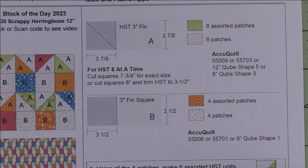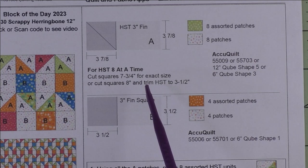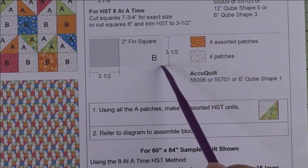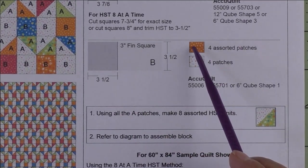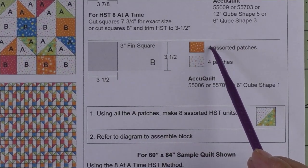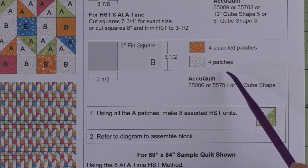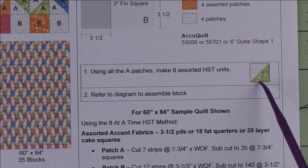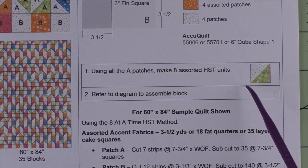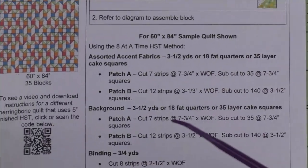But if I were doing an entire quilt I would use the half square triangles eight at a time. Patch B is a three inch finished square and we cut three and a half inch squares. We'll need four assorted squares of the accent fabric and four squares of the background fabric. We're just going to piece the half square triangles, then take the half square triangles and squares and put them together and assemble the block.